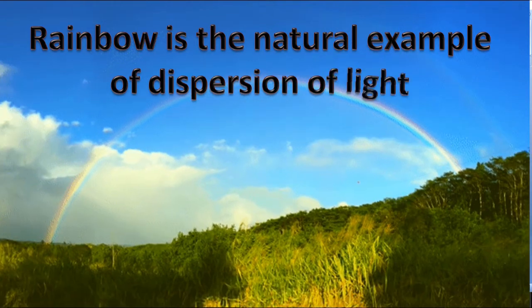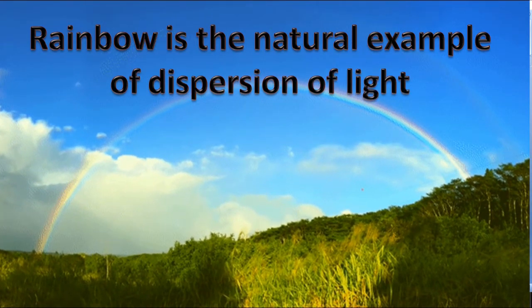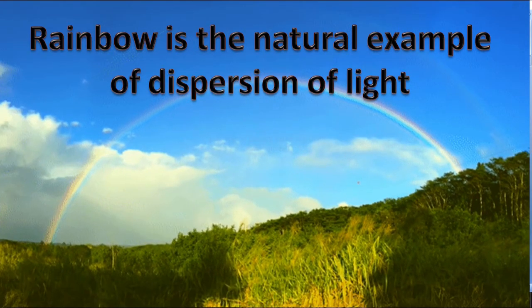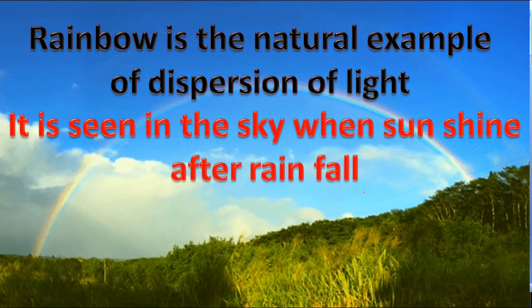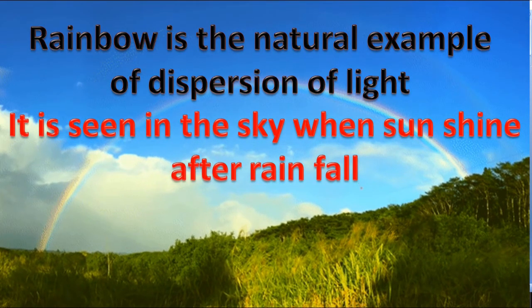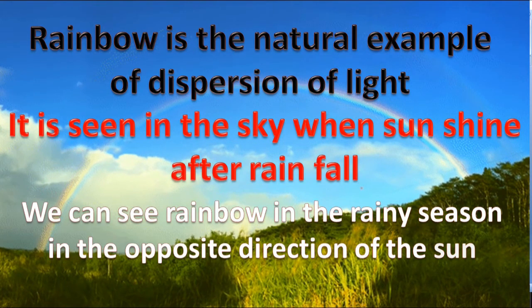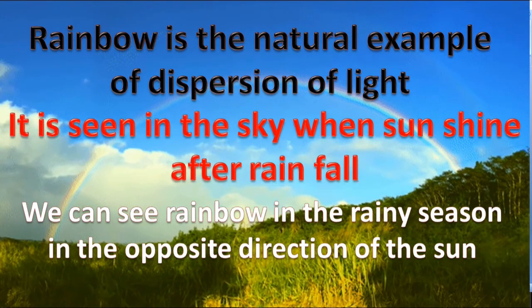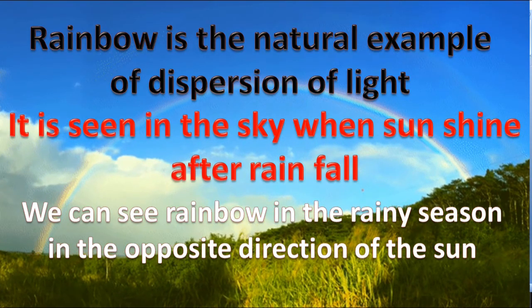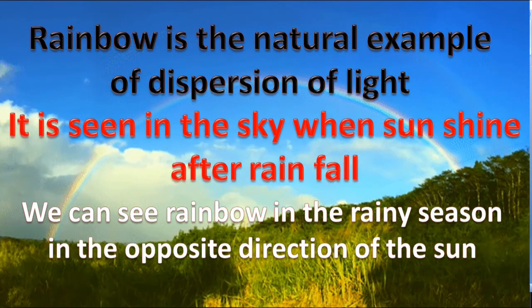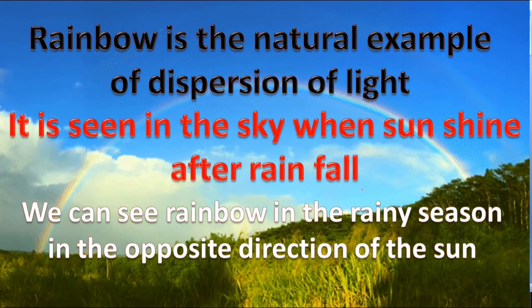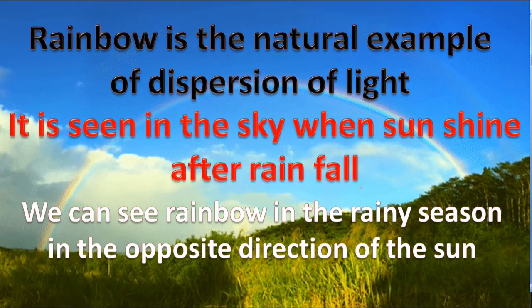A rainbow is the natural example of dispersion of light. It is seen in the sky when sunshine appears after rainfall. We can see rainbows in the rainy season in the opposite direction of the sun, just after rainfall when sunshine appears.